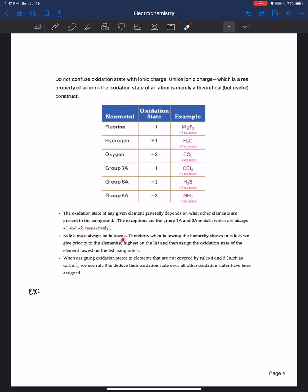Rule three must always be followed. Therefore, when following the hierarchy shown in rule five, we give priority to elements highest on the list and then assign the oxidation state of the element lowest on the list using rule three. Like adds up to zero if it's neutral, adds up to the charge if it's got an overall charge. When assigning oxidation states to elements that are not covered by rules four and five, such as carbon, we use rule three to deduce their oxidation state. So essentially work backwards once all other oxidation states have been assigned.